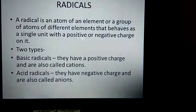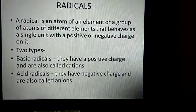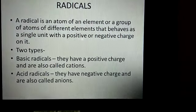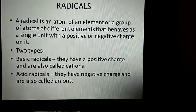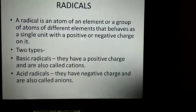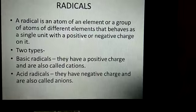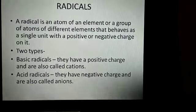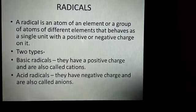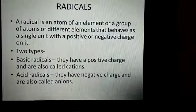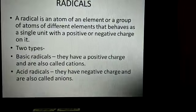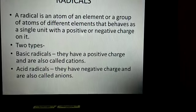Now, the next is radicals. A radical is an atom of an element or a group of atoms of different elements that behaves as a single unit with a positive or negative charge. It is of 2 types. Basic radicals, they have a positive charge and are also called cations. And the next is acid radicals, they have negative charge and are also called anions.